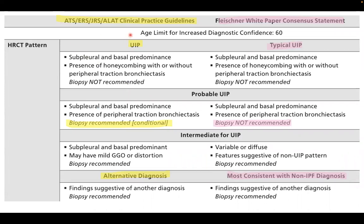Clinical practice guidelines were provided by the American Thoracic Society, European Respiratory Society, Japanese Respiratory Society, plus the Fleischner White Paper Consensus Statement — both major groups interested in thoracic imaging. The HRCT patterns are divided into four categories by each group. The ATS uses the name 'UIP' for the typical picture, while the Fleischner Society calls it 'typical UIP.' The other categories — probable UIP, indeterminate UIP, and alternative diagnosis — are shared, with minor naming differences.